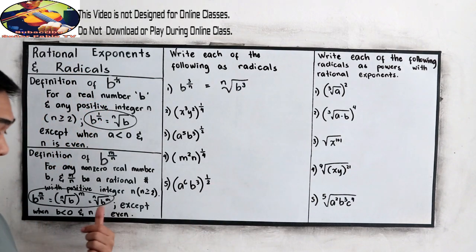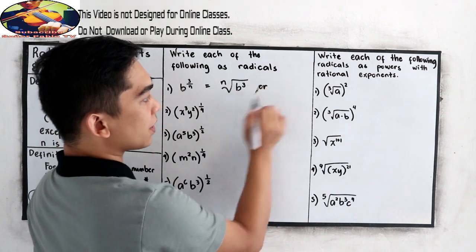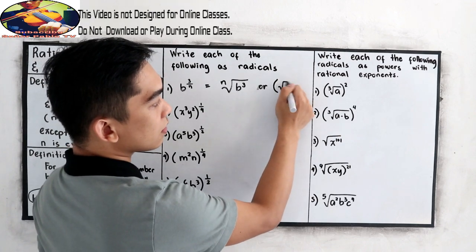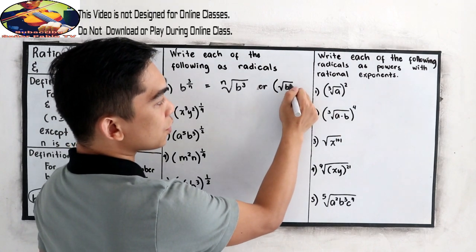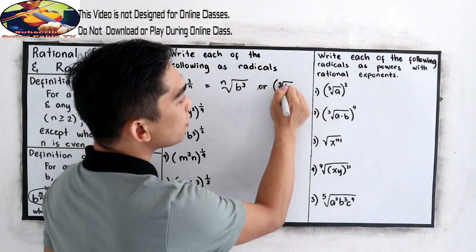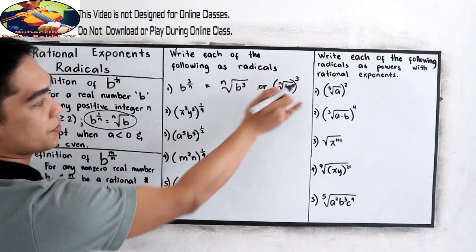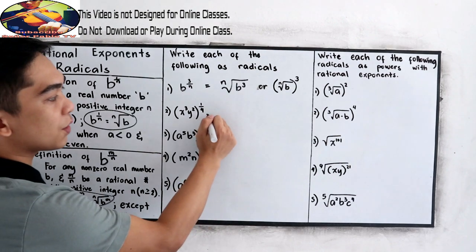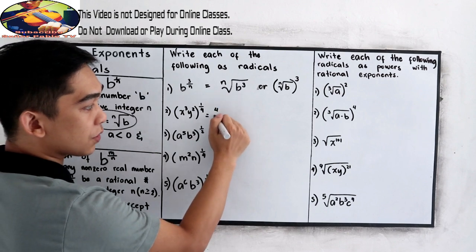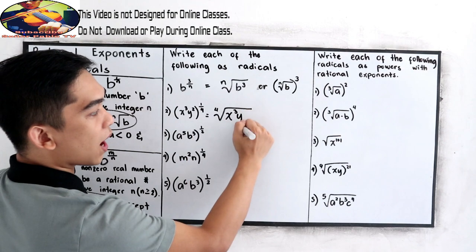So that is equal to N root of B raised to M. Or, in other form, also equal to, let's use this, quantity B raised to M. Now, quantity N root of B raised to 3. The two are the same. The other one, we have fourth root of X cubed Y squared.